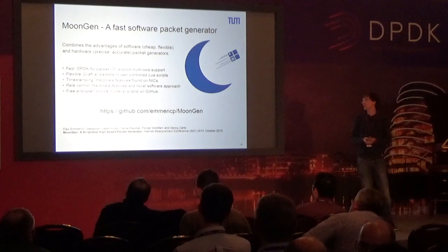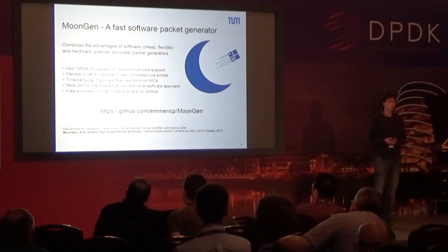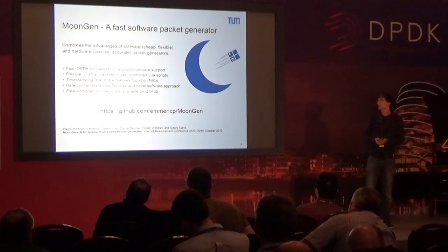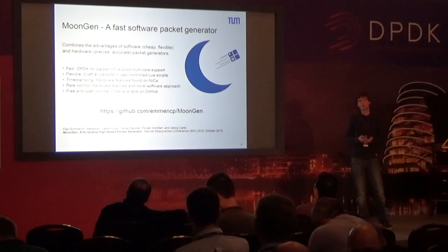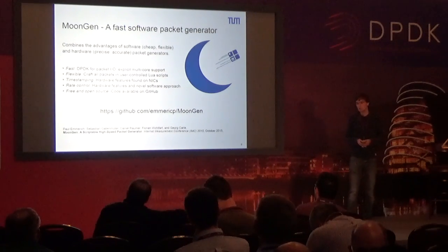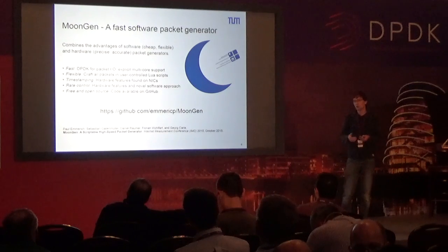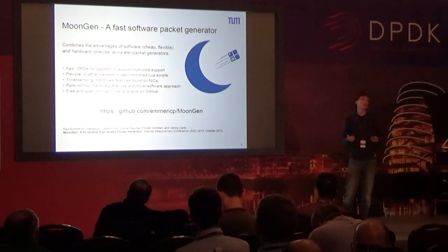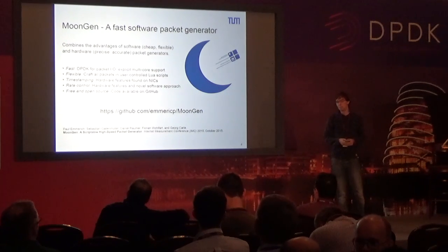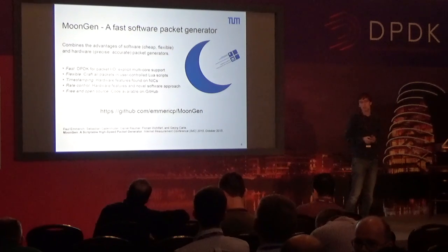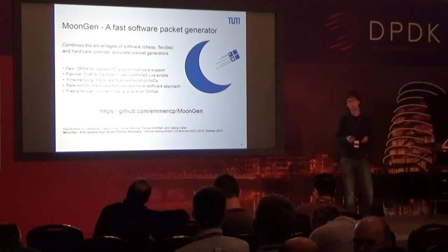There are basically four main points to MoonGen, and four really important points. I can't go into all of them today. The first one, obviously, it has to be fast. And being fast is easy using DPDK. All our API, at all places, does explicit multicore support and the usual stuff.